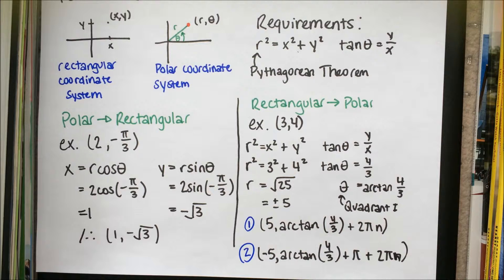You may notice that we added 2 pi n to both answers. This is to express the answers in all periods. If we did not add 2 pi n, the two answers would be expressed in the first period only.